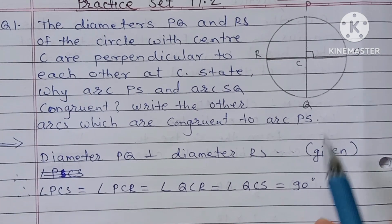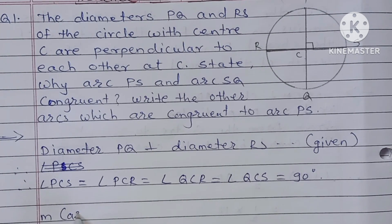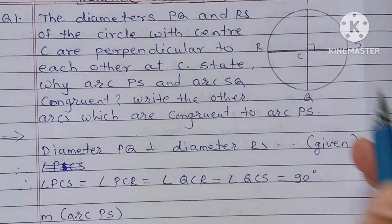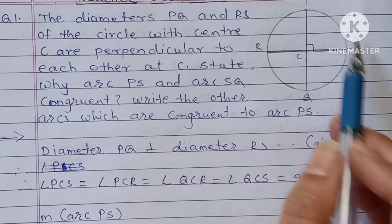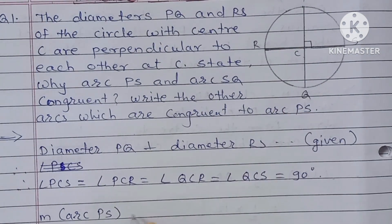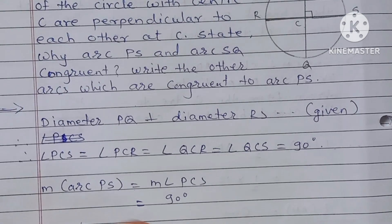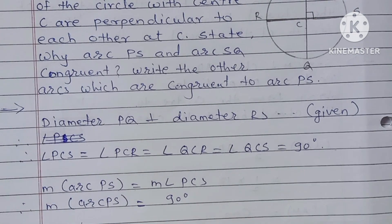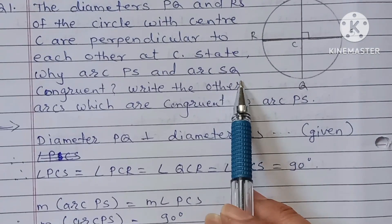Now, measure of arc PS is equal to the central angle PCS. Angle PCS is 90 degrees, therefore major arc PS is equal to 90 degrees. Now for arc SQ — where is that arc? Arc SQ.